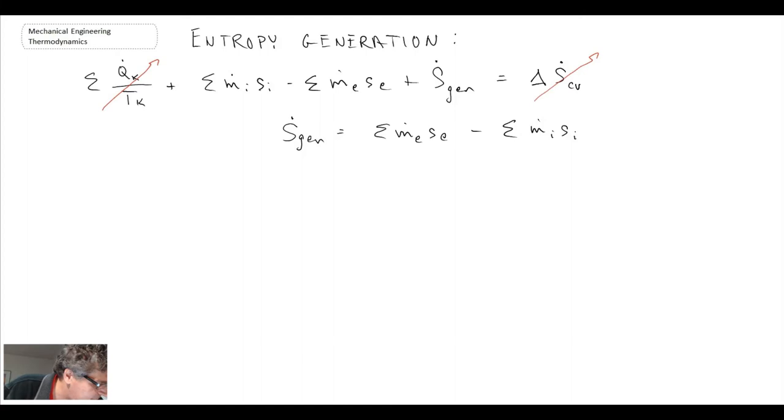So we're left with that for the entropy generation and we have our two fluid streams that we need to look at so let's express it in terms of both the methane and the ethane.